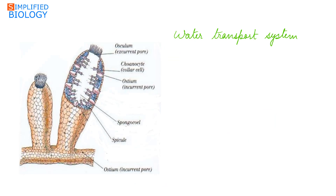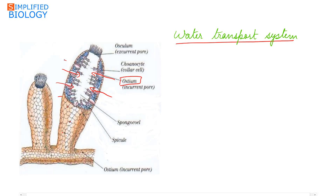Porifera, or sponges, have a water transport system, also called a water canal system. As pores are present all over the body, water enters from outside into the body through pores called ostia. This water then enters the central cavity called the spongocoel, and moves out of the body through an opening called the oscula.